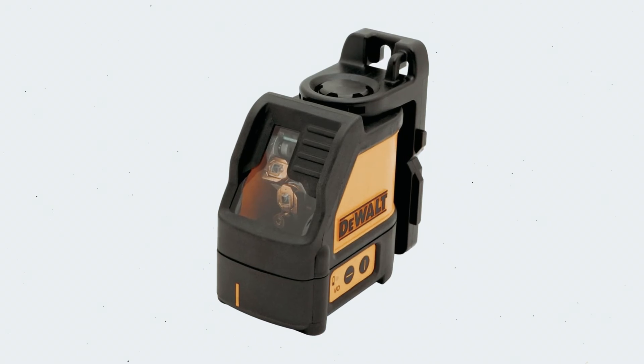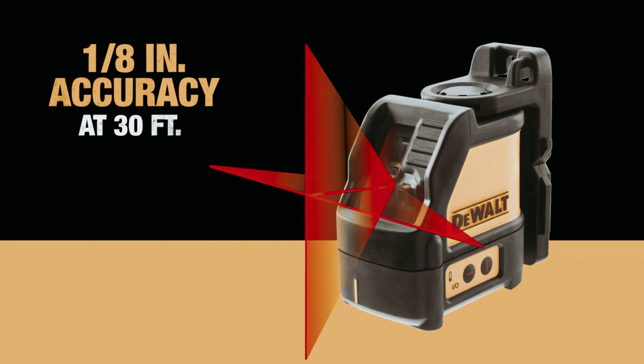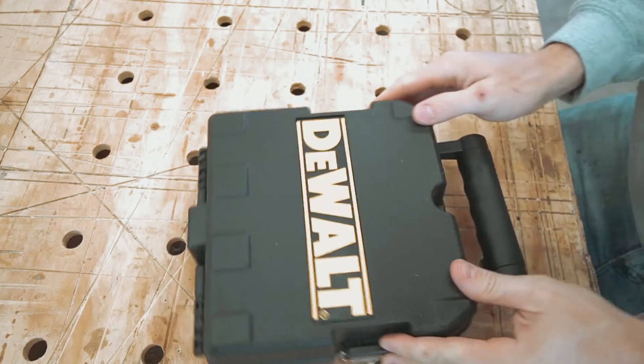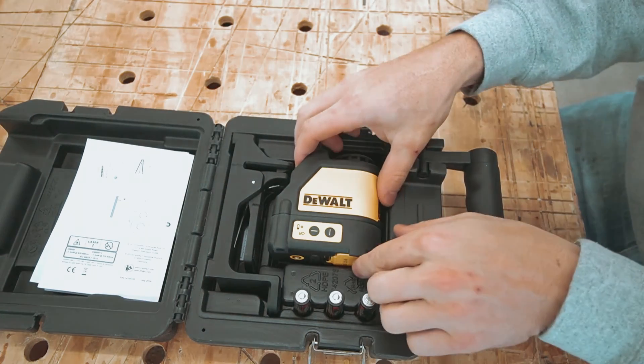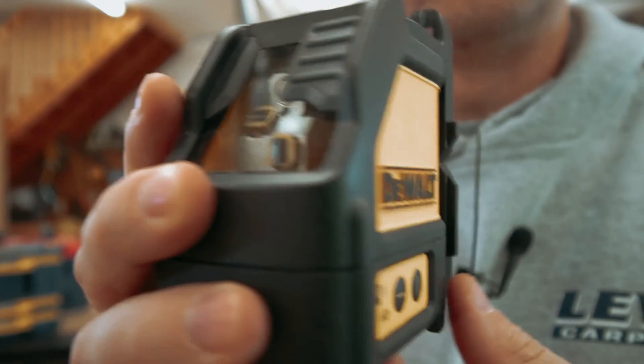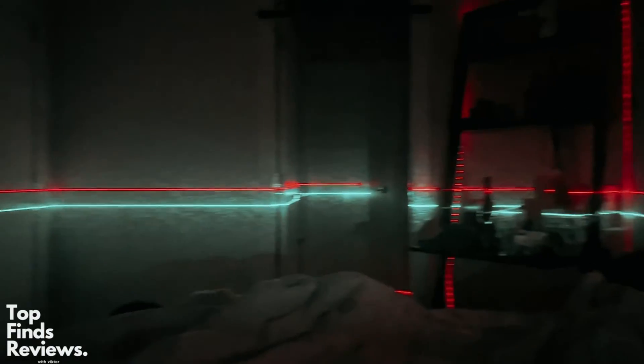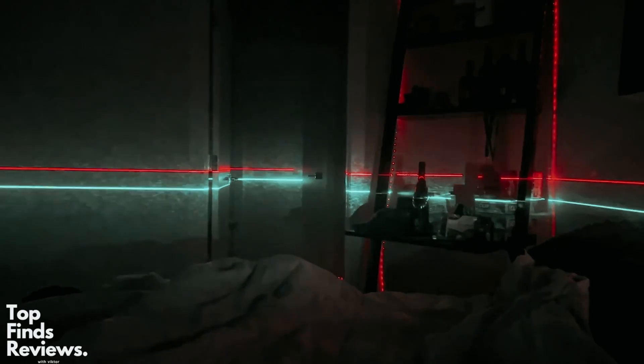Up next in fourth place is the DEWALT LINE Laser. The DEWALT LINE Laser is a versatile and reliable tool that delivers exceptional performance for a variety of leveling and alignment tasks. This laser level stands out for its durability with an over-molded housing that can withstand drops of up to 1 meter, making it ideal for tough job site conditions.